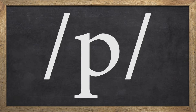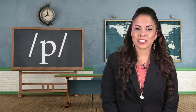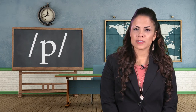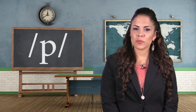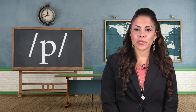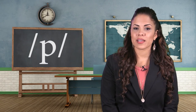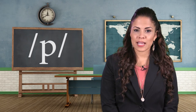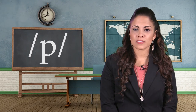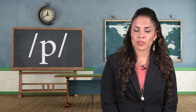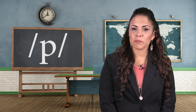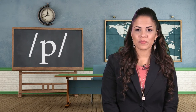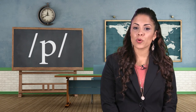The next sound is /p/. To produce /p/, you must bring your lips together just like /b/. But /p/ is sometimes silent. We don't pronounce /p/ when it begins a word and is followed by the letter S — for example, psychology, pseudonym, psychological. The /p/ is also silent at the beginning of a word before the letter N — for example, pneumonia.